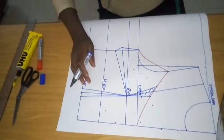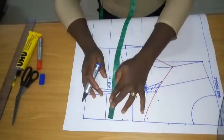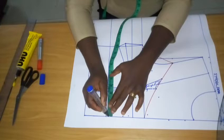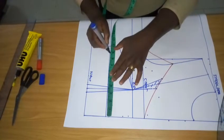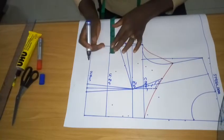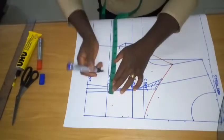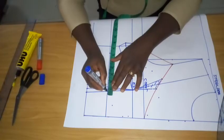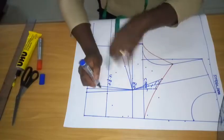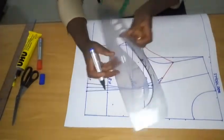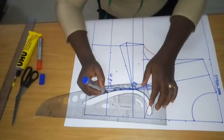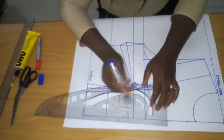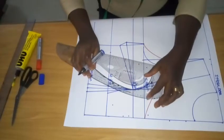And coming to the under bust tightening, I'm going to tighten my under bust from the center front. So my under bust divided by 4, whatever I have. What is remaining here, I'll add 0.25, and the rest I'll add it over here.